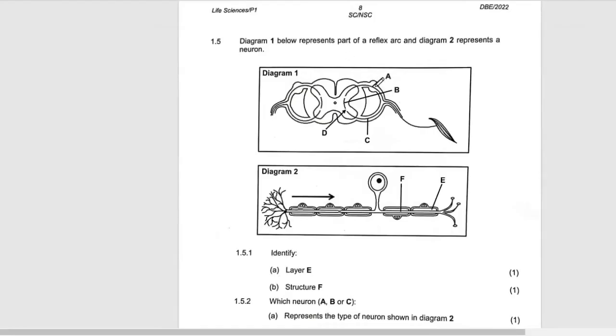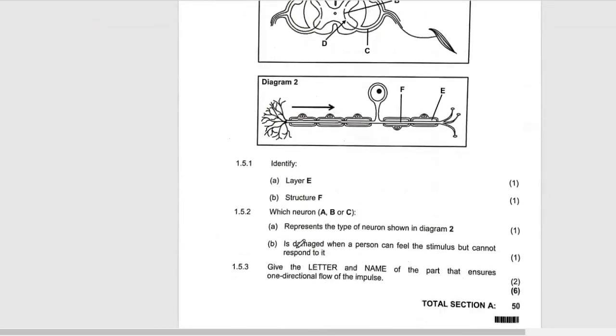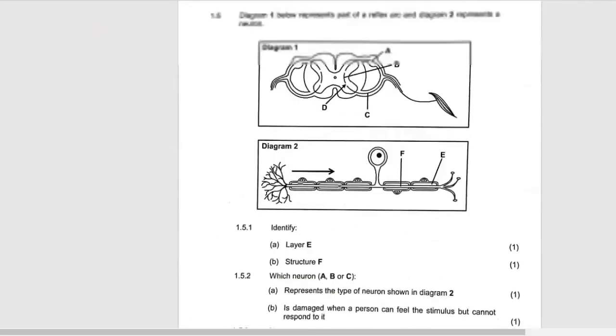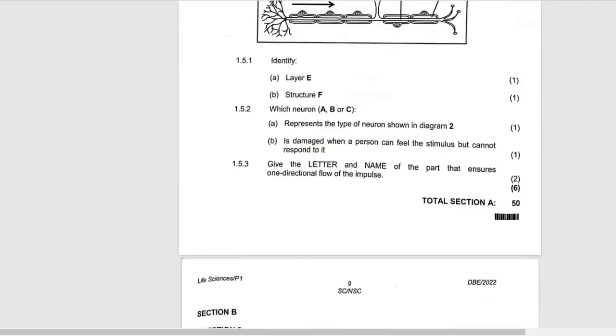They're saying that if damaged, when a person can feel the stimulus but cannot respond, it means that the sensory neuron is working, that's why you're able to feel, but the motor neuron cannot work, that's why you can't respond.